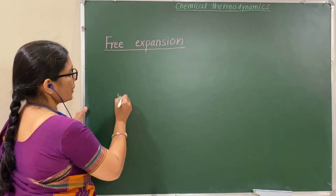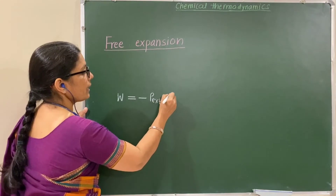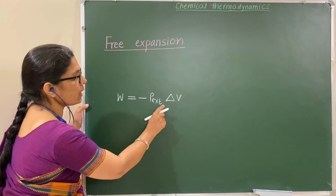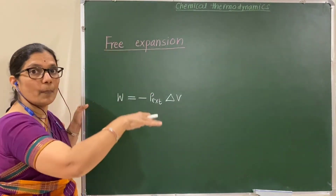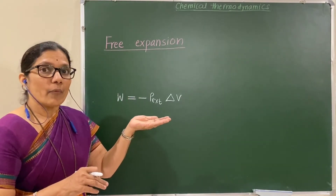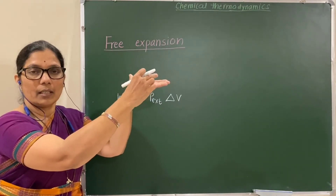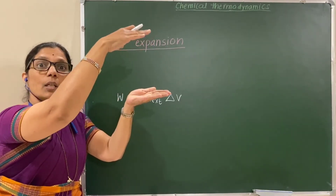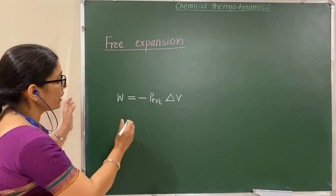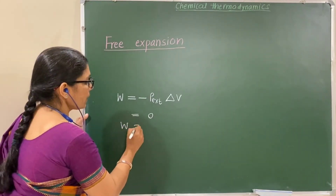You just studied that W = minus P_external × delta V. So work depends on the external pressure, that is the opposing force. When gas expands in a vacuum, vacuum means no air, meaning no pressure, meaning no opposing force. Therefore external pressure is zero, which means work is equal to zero.